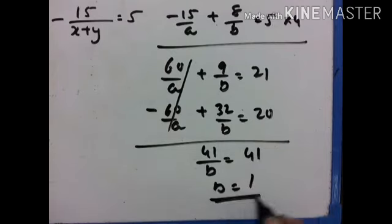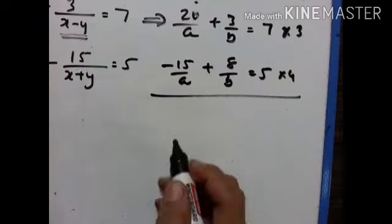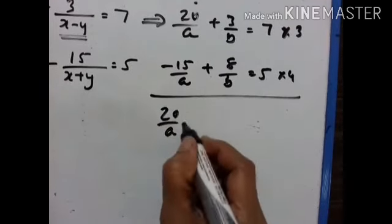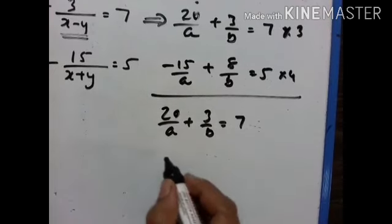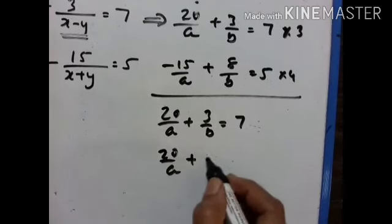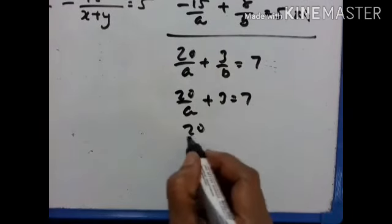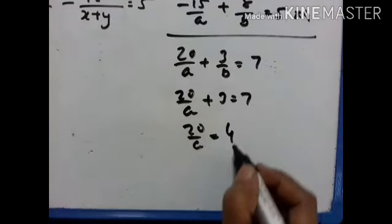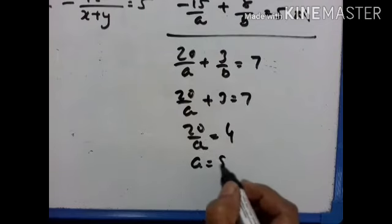So b is equal to 1. That means x minus y is equal to 1. Now let us find the value of a. Using the first equation: 20 upon a plus 3 upon b is equal to 7. Substituting b equals 1: 20 upon a plus 3 is equal to 7, so 20 upon a is equal to 4. Therefore a is equal to 5.